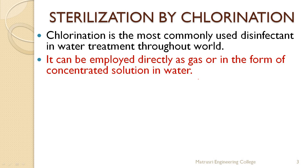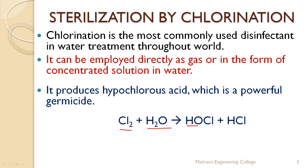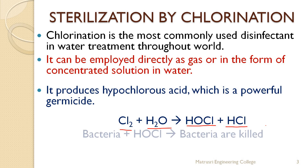Chlorination is the most commonly used disinfectant in water treatment throughout the world. It can be employed directly as a gas or in the form of a concentrated chlorine solution in water. When chlorine gas or concentrated chlorine solution is injected into water, it produces hypochlorous acid. This hypochlorous acid is a powerful germicide. Cl₂ reacts with water to produce hypochlorous acid along with hydrochloric acid — both are very good germicides and strong disinfectants.